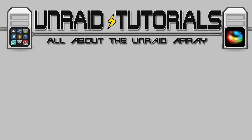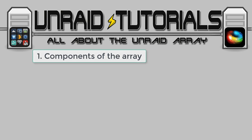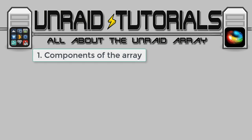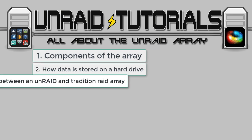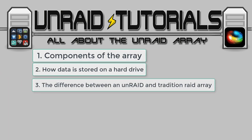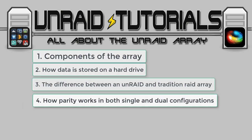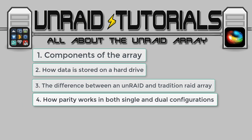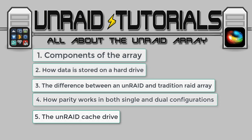In this video we're going to discuss all about the Unraid Array and we're going to look at the following things: one, the components of the array; two, how data is stored on a hard disk; three, the difference between an Unraid Array and a traditional array; four, how parity works in both single and dual configurations; and five, how the cache drive is used in Unraid.